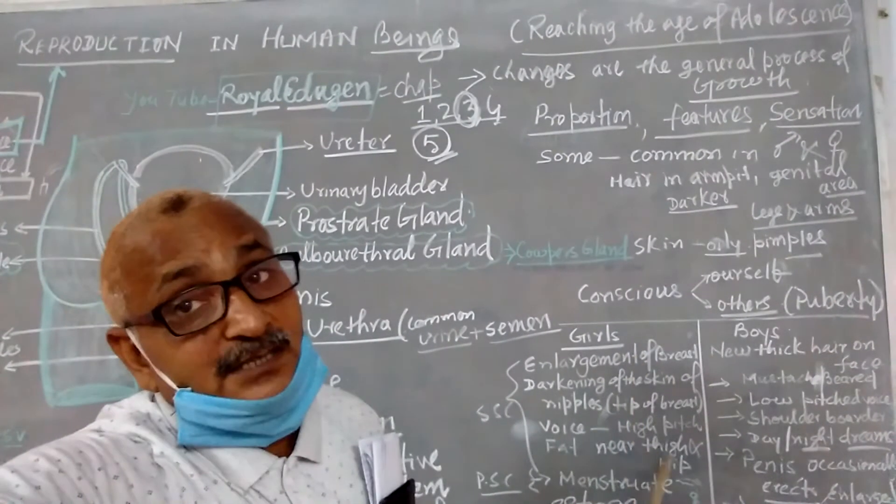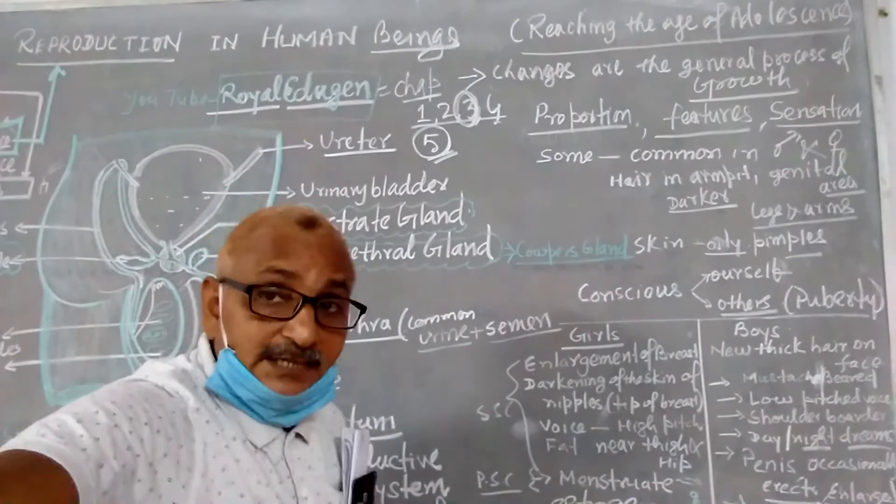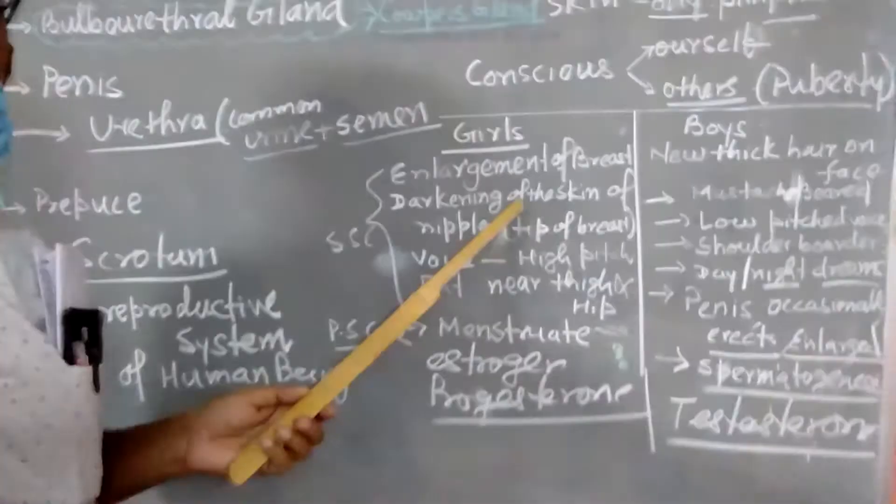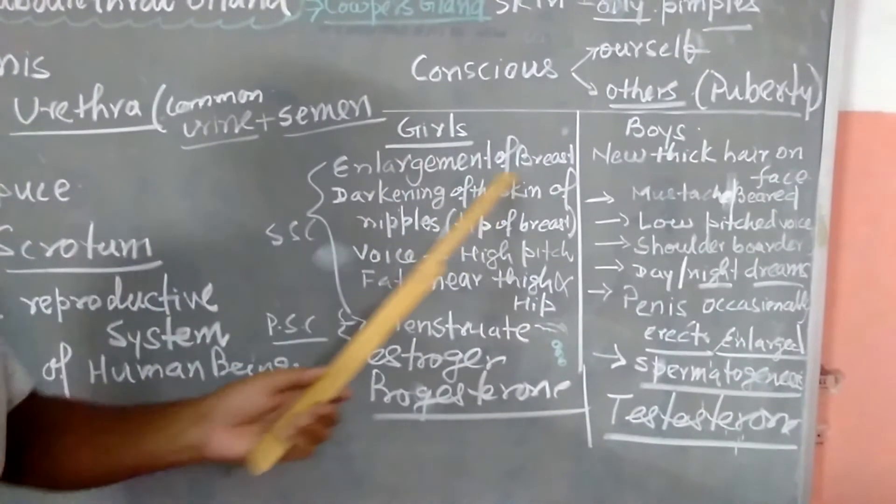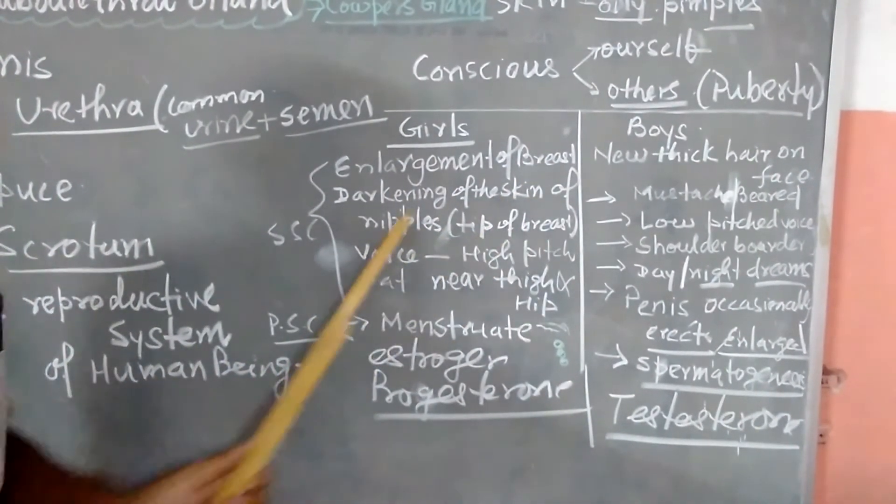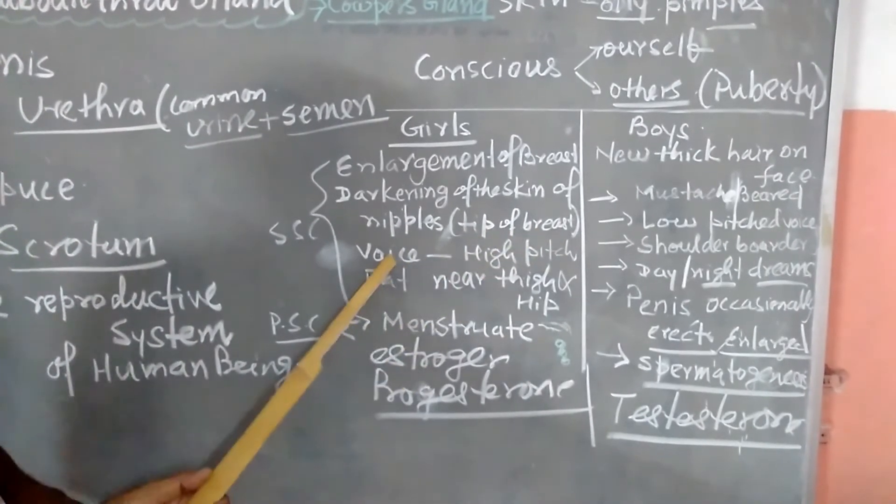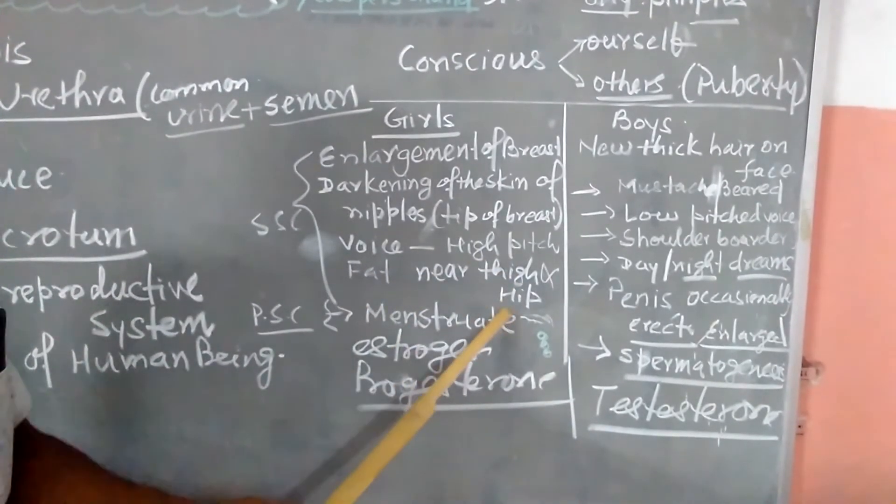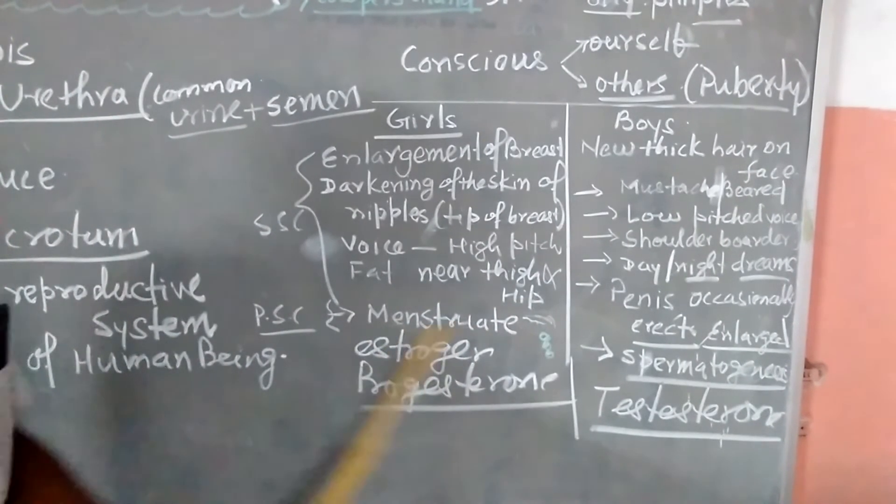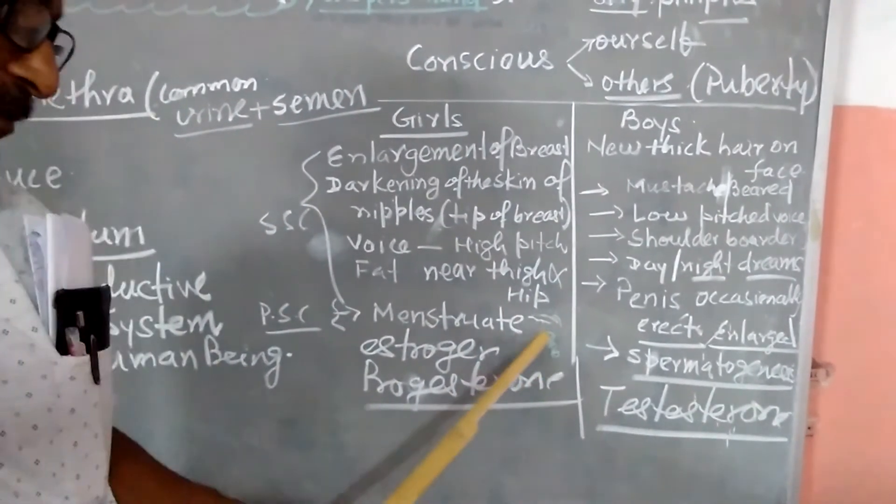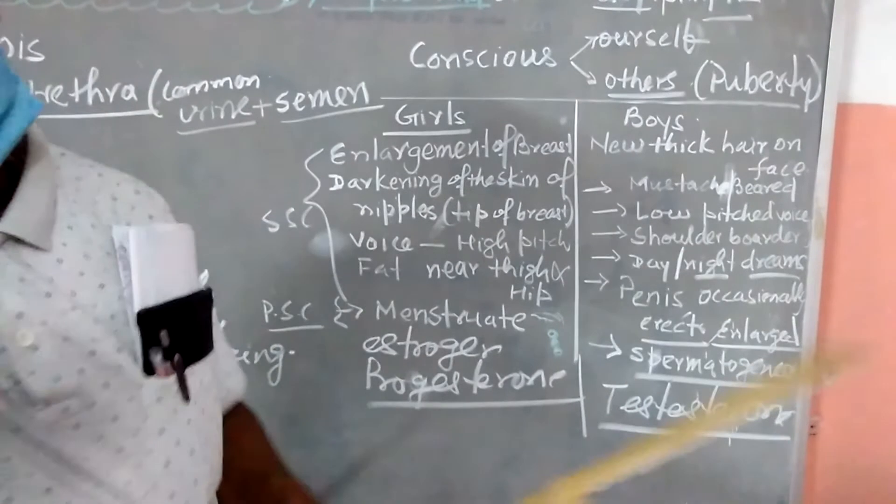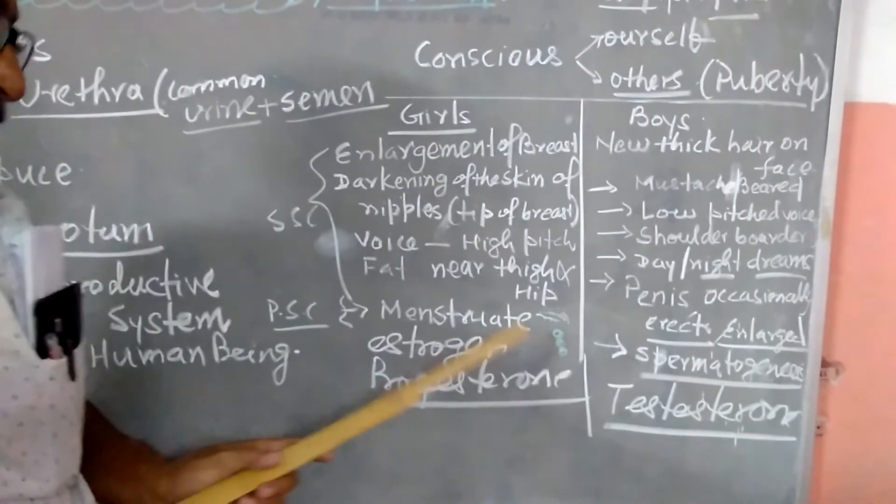Now, some special changes found in girls and boys. Here, they are listed. Try to understand the features. Changes in the girls. You may see. The changes in the girls, enlargement of breast. Darkening of the skin of the nipples. Nipple is called the tip of the breast. The voice becomes high pitched. Slender voice. And fat near the thigh and hip area start depositing. Menstruate. They start menstrual flow. Blood along with some tissue. So that is called menstruation. So menstruation starts. First menstruation, onset of menstruation is called menarche.